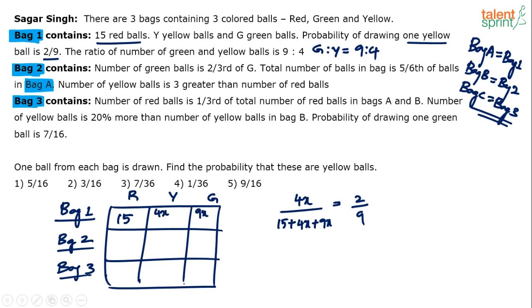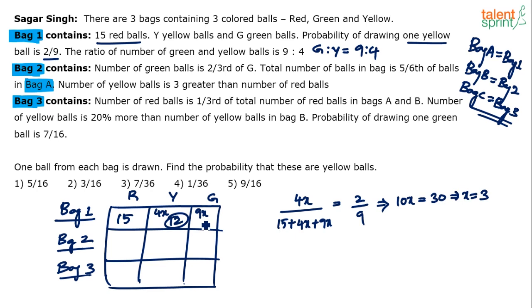Simplifying: 4x × 9 = 2 × (15 + 13x), giving 36x = 30 + 26x, so 10x = 30, meaning x = 3. Therefore yellow balls = 4 × 3 = 12, and green balls = 9 × 3 = 27. Bag one has 15 red, 12 yellow, and 27 green balls — total 54 balls.